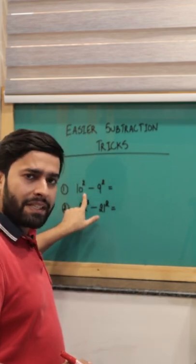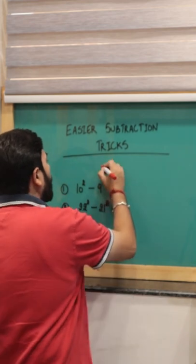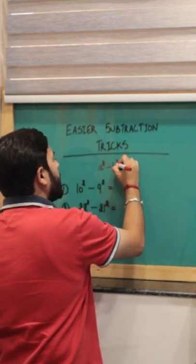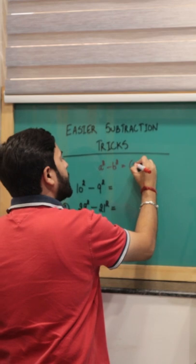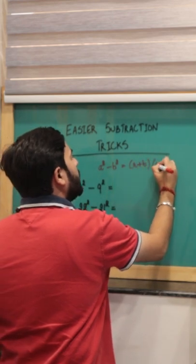When you are given two numbers that are consecutive, always use this identity: A square minus B square, that is equal to A plus B into A minus B.